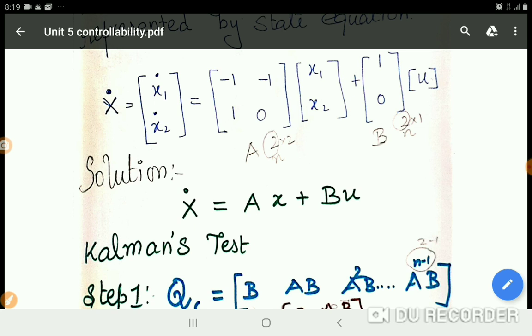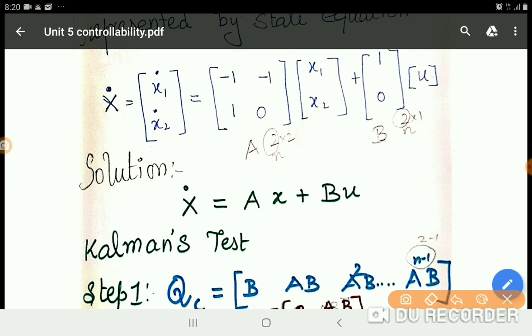So we are asked to find or check the controllability of the given state equation. Before proceeding to the solution part, we just observe the state equation in standard form is ẋ = Ax + Bu. Then you just compare the asked question with the standard form.